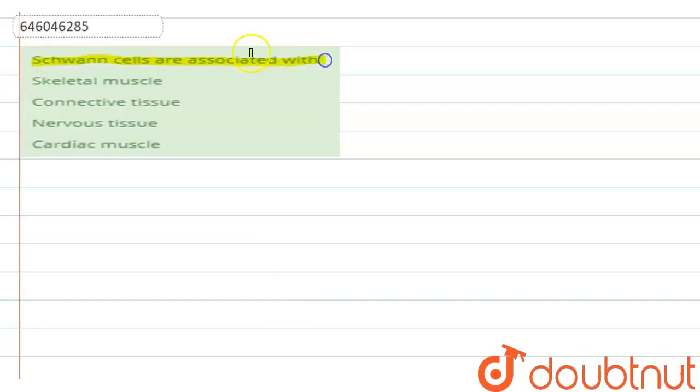Given options are skeletal muscle, connective tissue, nervous tissue, or cardiac muscle. So if we talk about the term Schwann cells, they are the principal glia of the peripheral nervous system.